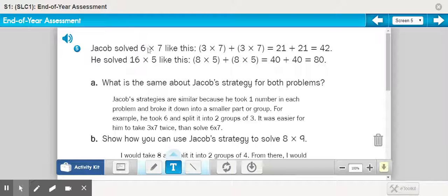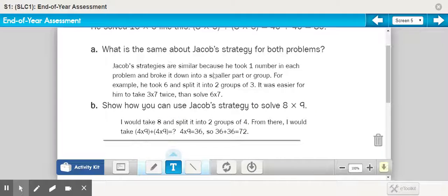And so here you can see that I said he took six and split it into two groups of three. So the six that is up here in 6 × 7, that six was split into three and three. And in math, often smaller numbers are easier for us to handle. And so for Jacob, he thought it would be easier to do 3 × 7 twice than solve 6 × 7. And so here's my explanation. If you have something similar to this, then I would say your answer is probably correct or lengthy enough to fully answer this question.